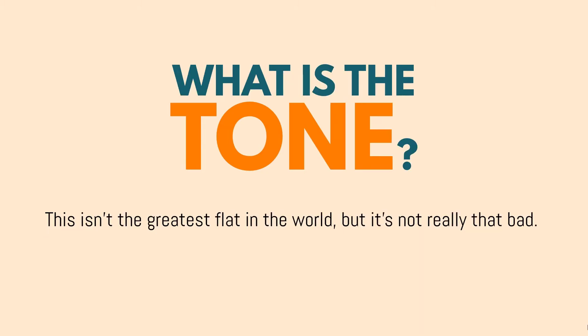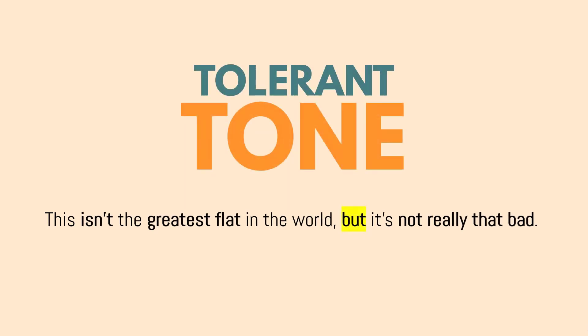Next, let's take a look at the second sentence: 'This isn't the greatest flat in the world, but it's not really that bad.' This part where I mentioned the word 'but' is what you can actually use to figure out what kind of tone it is. It is actually a tolerant tone. Tolerant tone basically means that the person is able to tolerate the situation or circumstance. The word 'but' appears again — the behind part, which is 'it's not really that bad,' is actually more important than the front part. The person tolerates it not being the greatest flat.